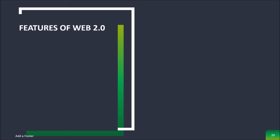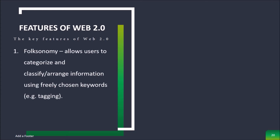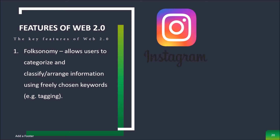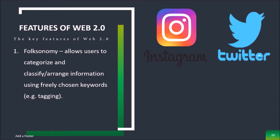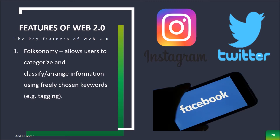The key features of Web 2.0 are the following. Number one is Folksonomy, which allows users to categorize and classify a range of information using freely chosen keywords — for example, tagging. Popular social networking sites such as Instagram, Twitter, and Facebook use tags that start with the pound sign, also referred to as a hashtag.